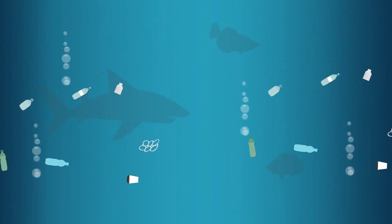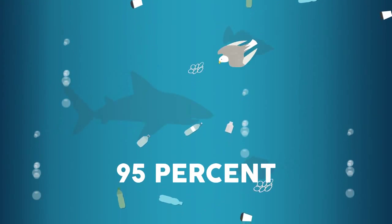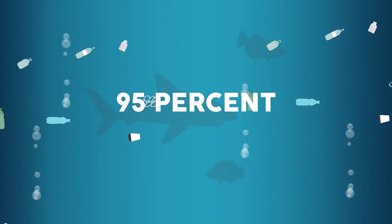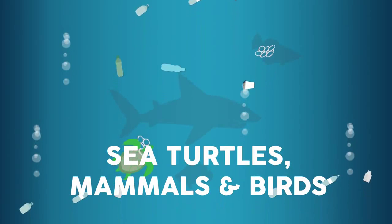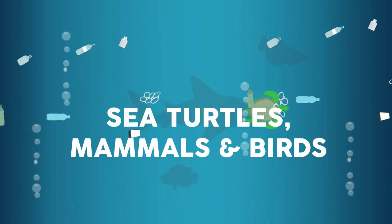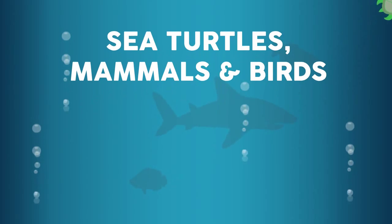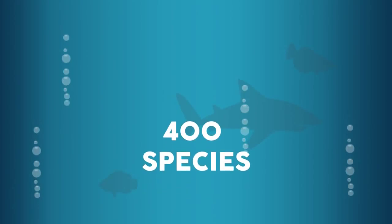Every year, thousands of marine species fall victim to our trash. 95 percent of northern fulmars found washed up dead in the North Sea had ingested plastic debris. All seven sea turtle species, over half of marine mammal species, and almost two-thirds of all seabird species have been injured or killed by our trash.